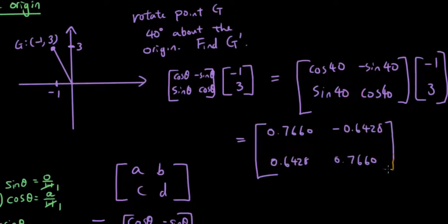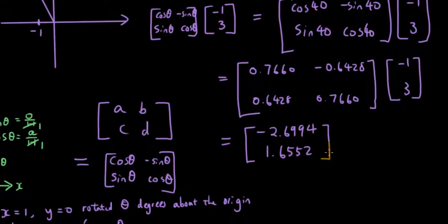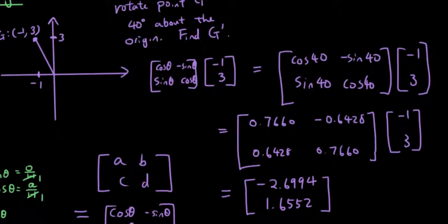So technically you should not round until you get the final answer. So if you can just leave it as it is and multiply the two matrices together, and then you should get negative 2.6994 as the x-coordinate and 1.6552 as the y-coordinate. Now I'm going to try typing these two points into GeoGebra and see if I have successfully transformed them.